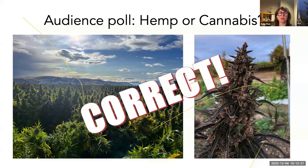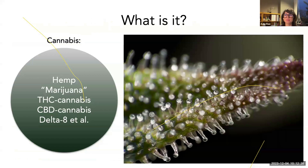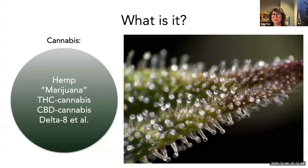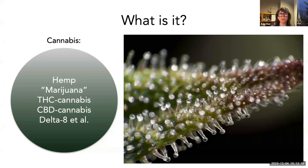Hemp is one variety of cannabis that happens to have very low THC levels. In the U.S., hemp is defined as cannabis containing 0.3% THC or less. That legal definition is obviously arbitrary — other regions like Switzerland, the EU, and the UK draw the line at 1% or 2%. In general, hemp is considered a variety of cannabis that contains very low levels of THC.